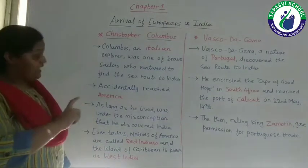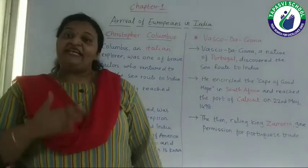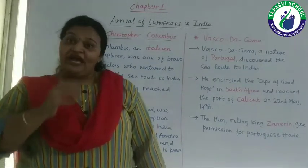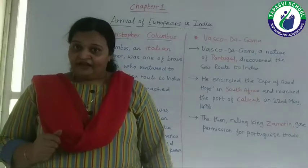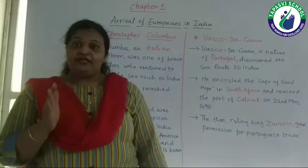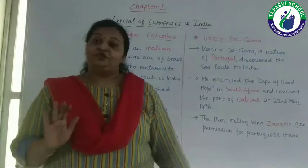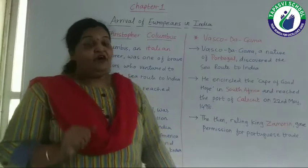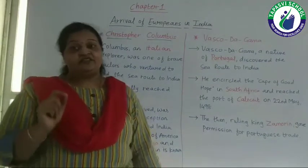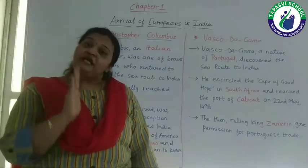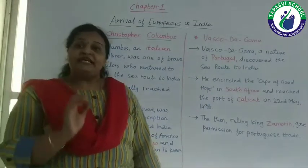To revise: Christopher Columbus was the first person who ventured to find out the new sea route to India. He tried, but where did he reach? He reached America by mistake and thought that it was India. Till the time he was alive, he thought he had discovered India, but it wasn't correct. He did not come to India — he by mistake went to America, where he named the people living there as Red Indians, and the island where he reached is known as West Indies. So the first attempt to find the new sea route to India by Christopher Columbus was not successful.